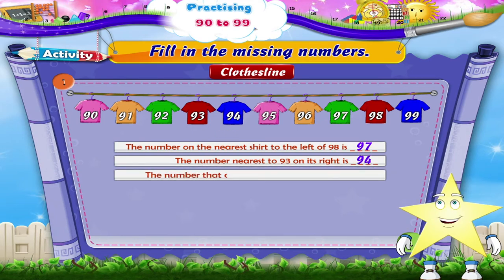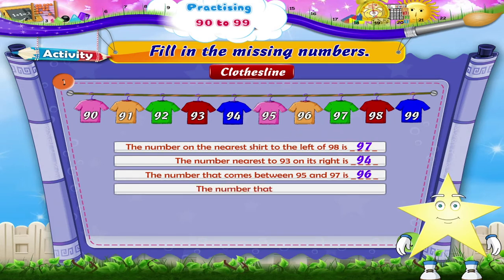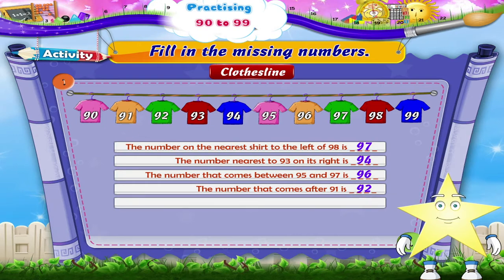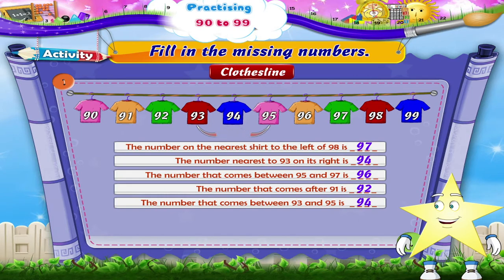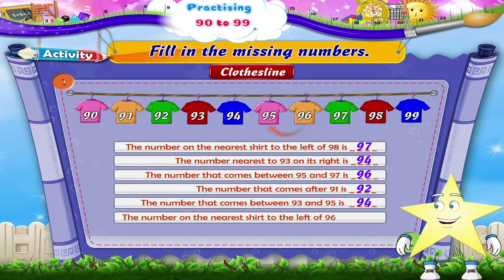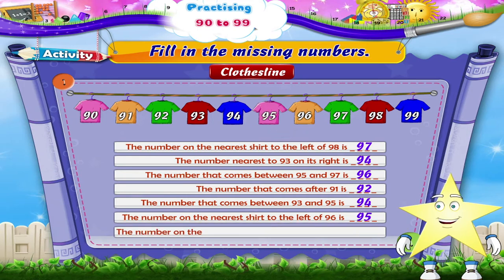The number nearest to 93 on its right is dash. 94. The number that comes between 95 and 97 is dash. 96. The number that comes after 91 is dash. 92. The number that comes between 93 and 95 is dash. 94. The number on the nearest shirt to the left of 96 is dash. 95. The number on the nearest shirt to the right of 98 is dash. 99.